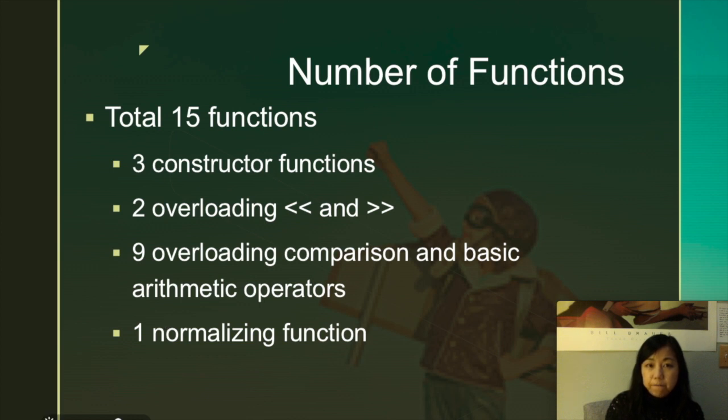So total number of functions are 15 of them, right? So three constructors, two overloading the input outputs, and nine of them are comparison, the arithmetic operators. Actually there's one more is normalizing function.